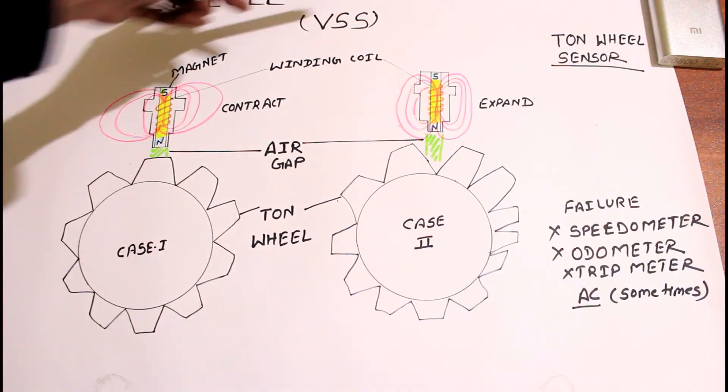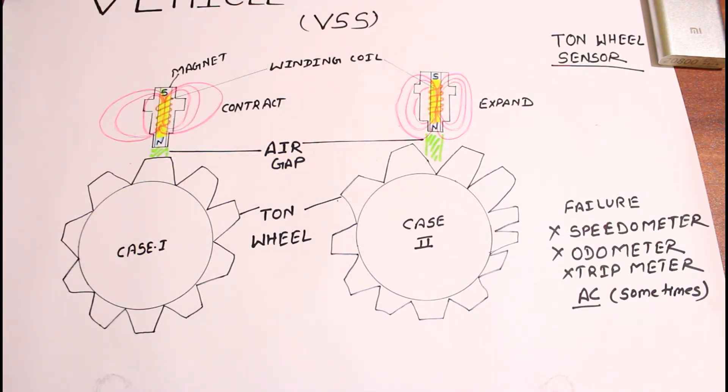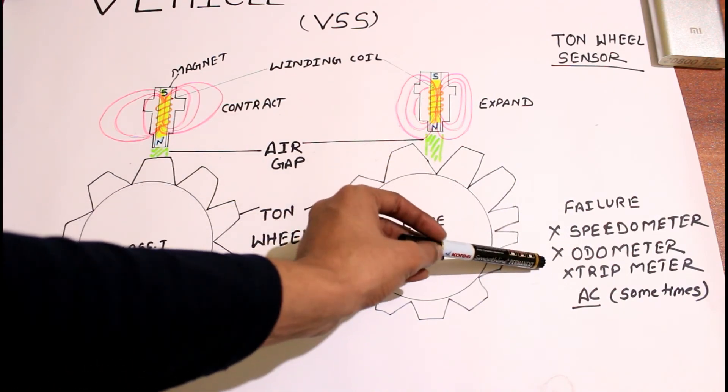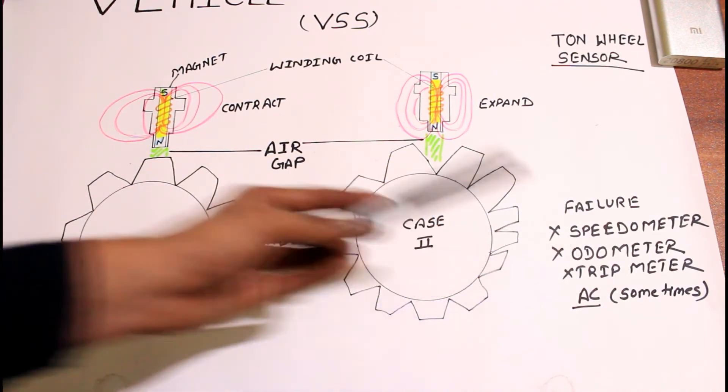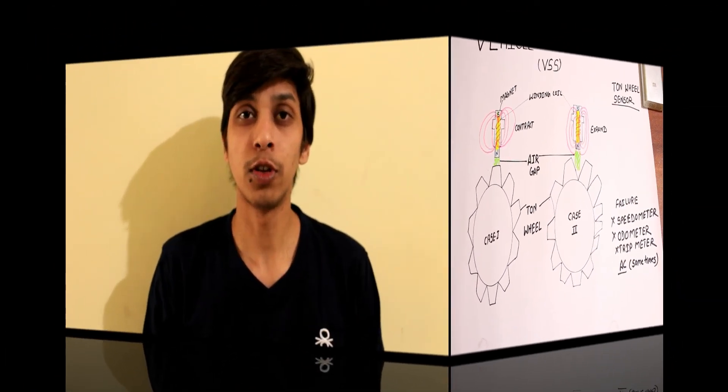This vehicle speed sensor is also known as the tone wheel sensor. In the condition of failure of vehicle speed sensor, speedometer cannot work, odometer cannot work, and trip meter cannot work, and sometimes AC also cannot work properly.